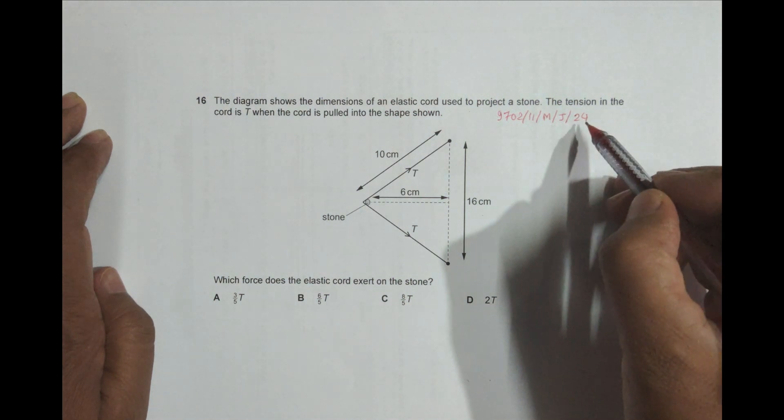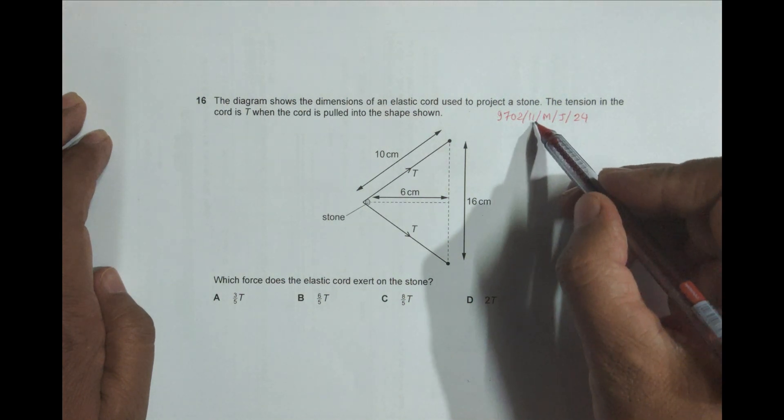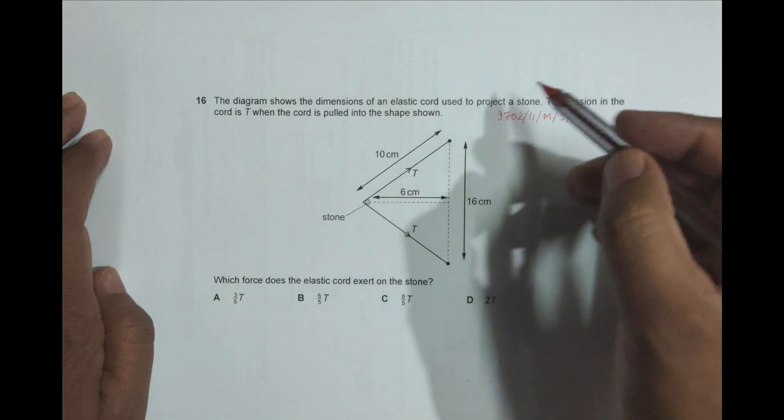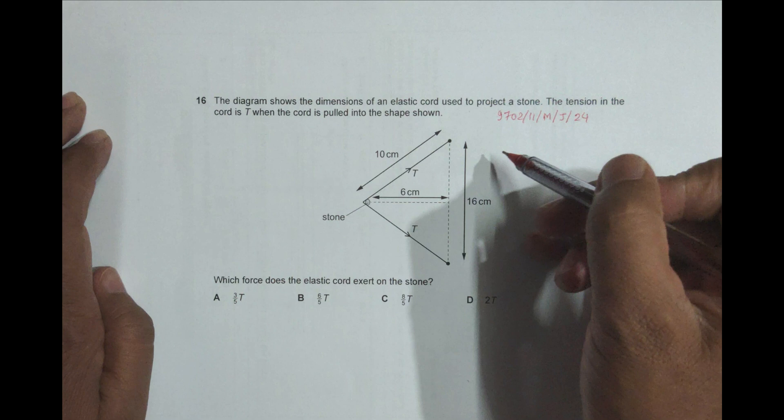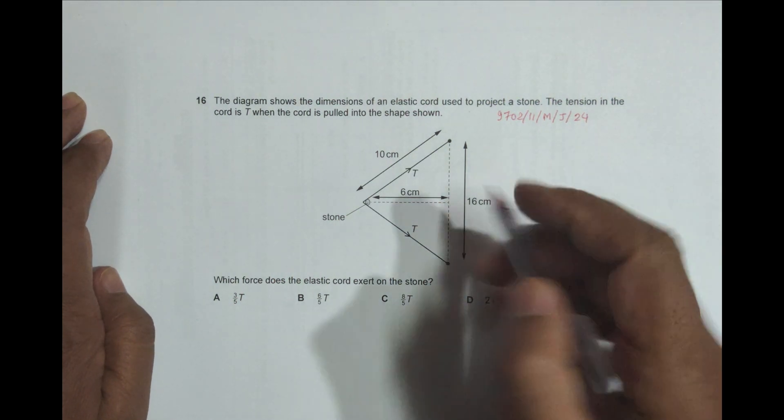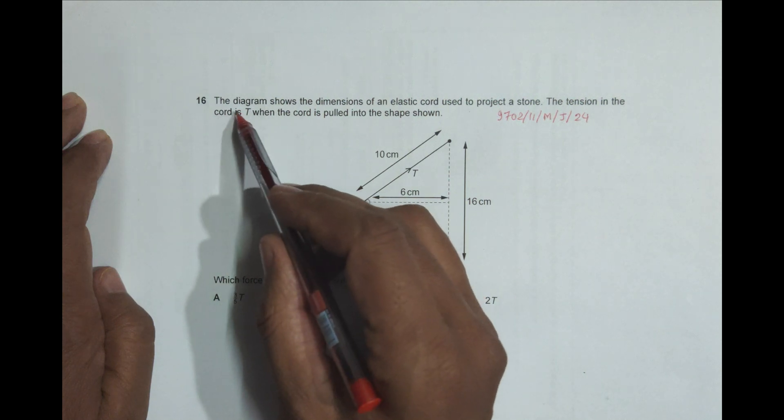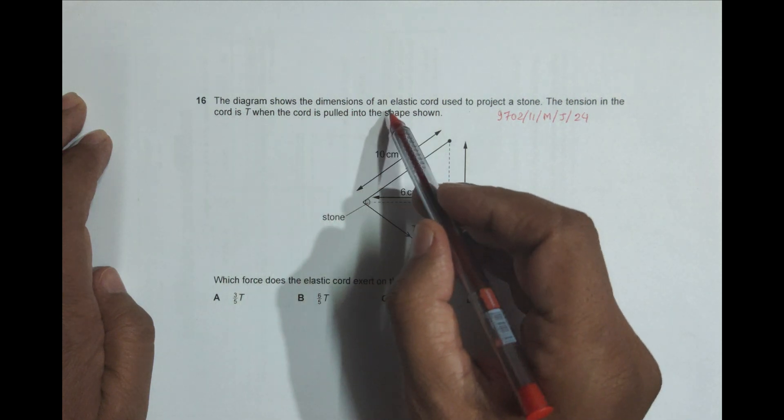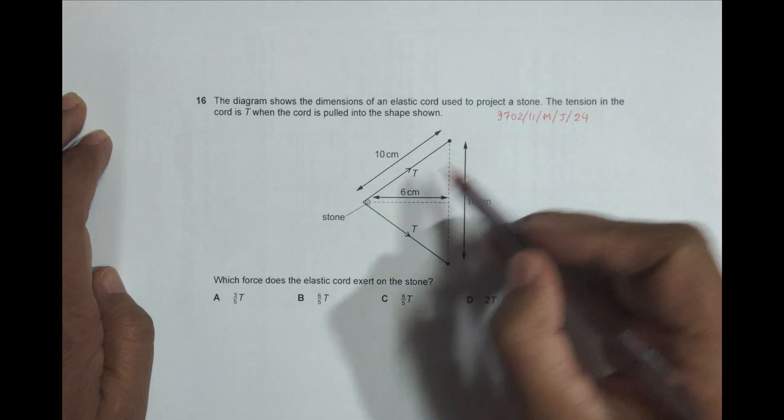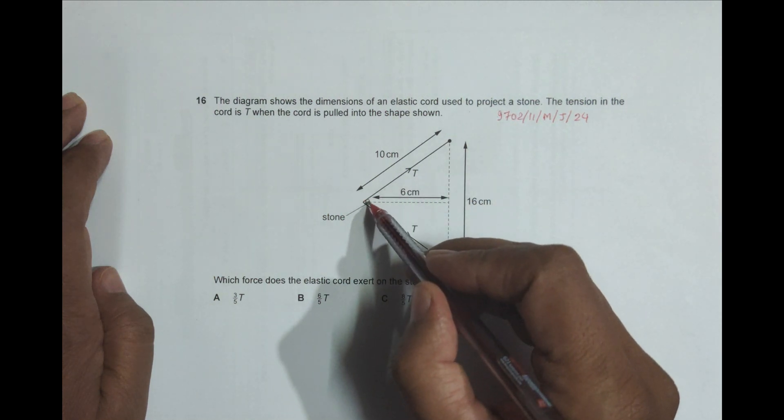Hello folks, this is 2024 May June paper 1 question number 16. The question is concerned with the chapter vectors because it deals with the resultant. The diagram shows the dimensions of an elastic cord used to project a stone.